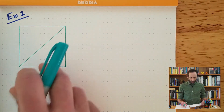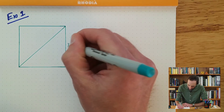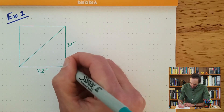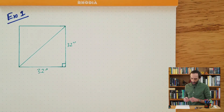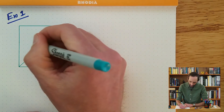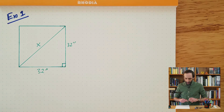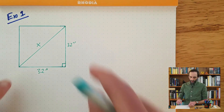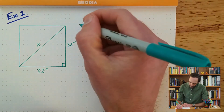So here I have my square. Remember it's a 32 by 32 square, so 32 inches by 32 inches. And of course this right here is a right angle — all four angles around the square are right angles. Now we want to find this length, we'll call it x. According to the Pythagorean Theorem, the square of this leg plus the square of this leg is equal to the square of the hypotenuse — in this case the diagonal of this square.